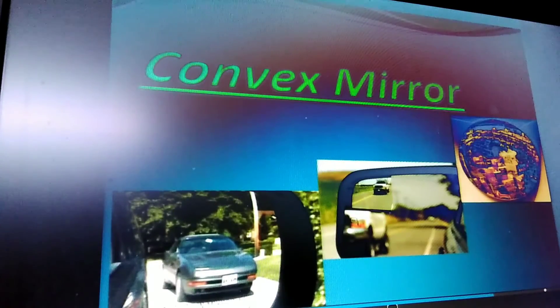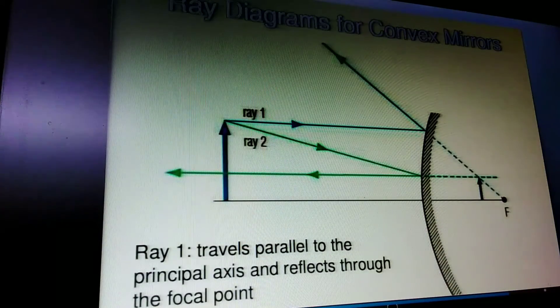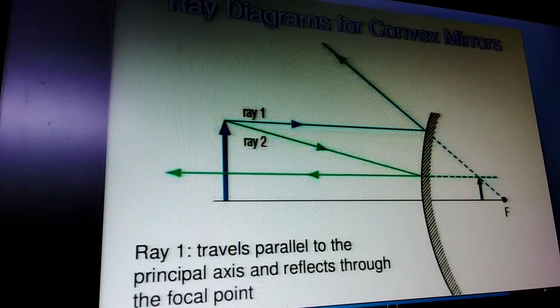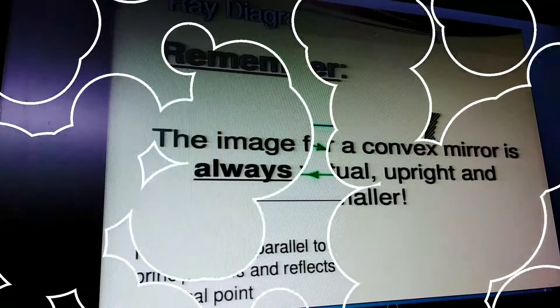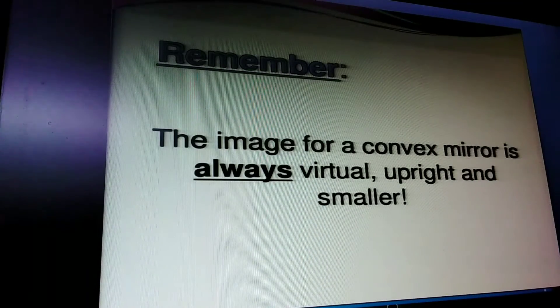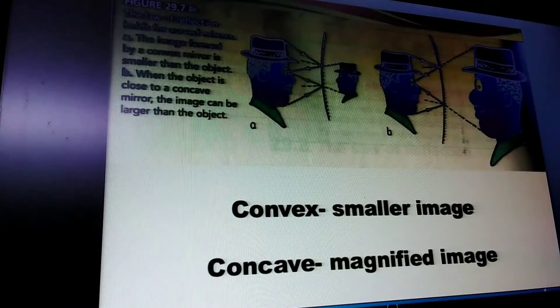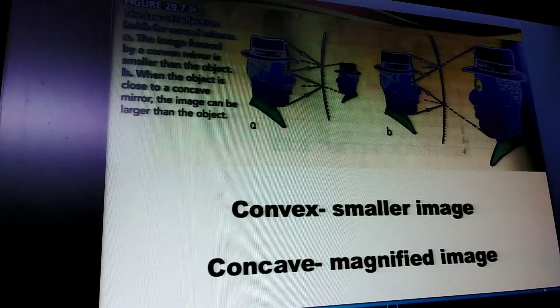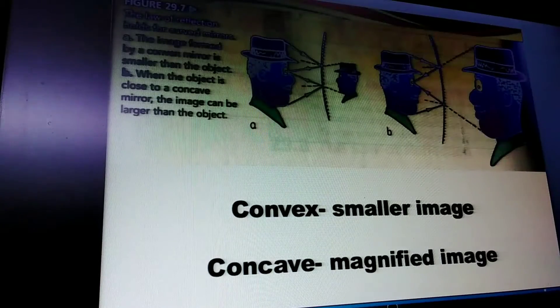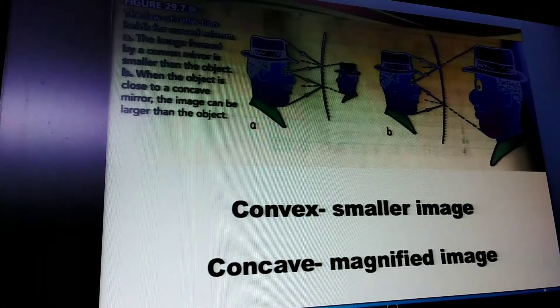Convex mirrors are used as rearview mirrors. They always form virtual, erect, diminished images. So convex mirrors produce smaller images, while concave mirrors produce magnified images.